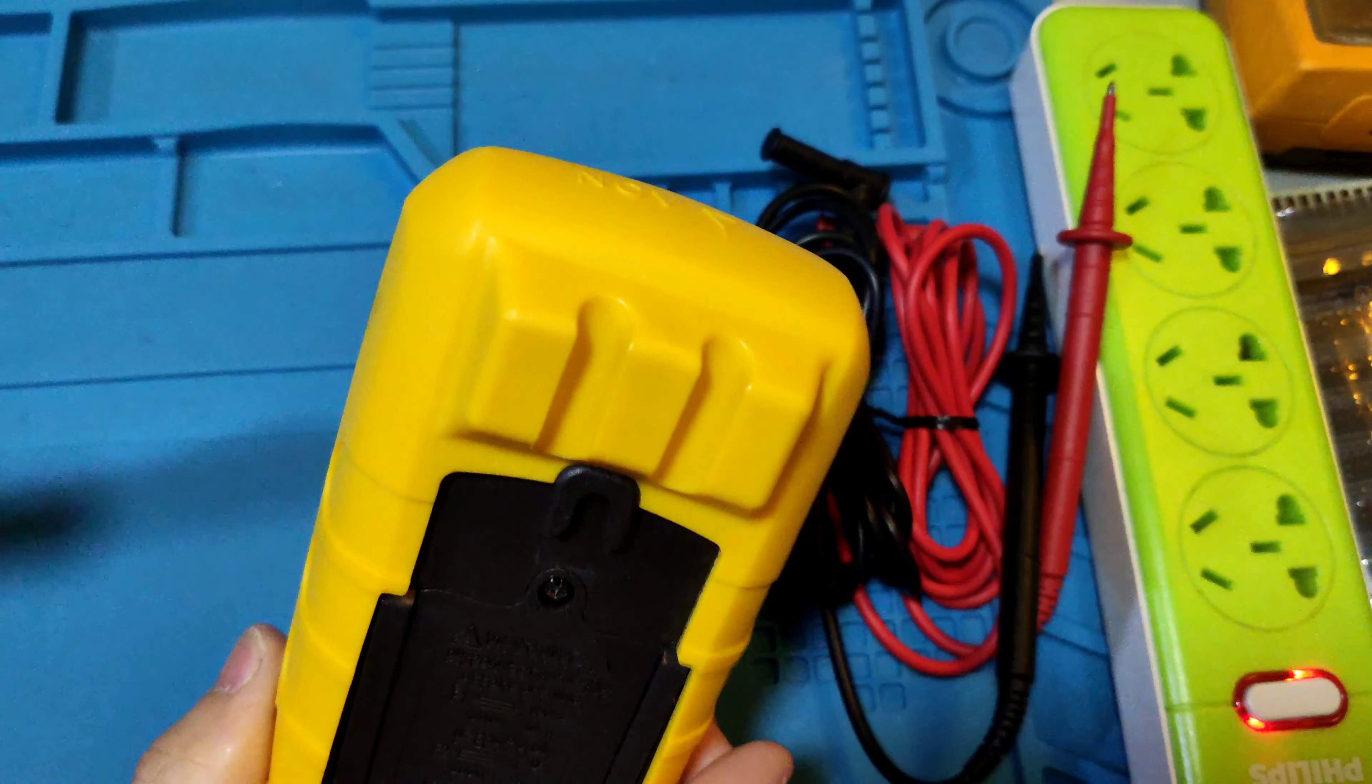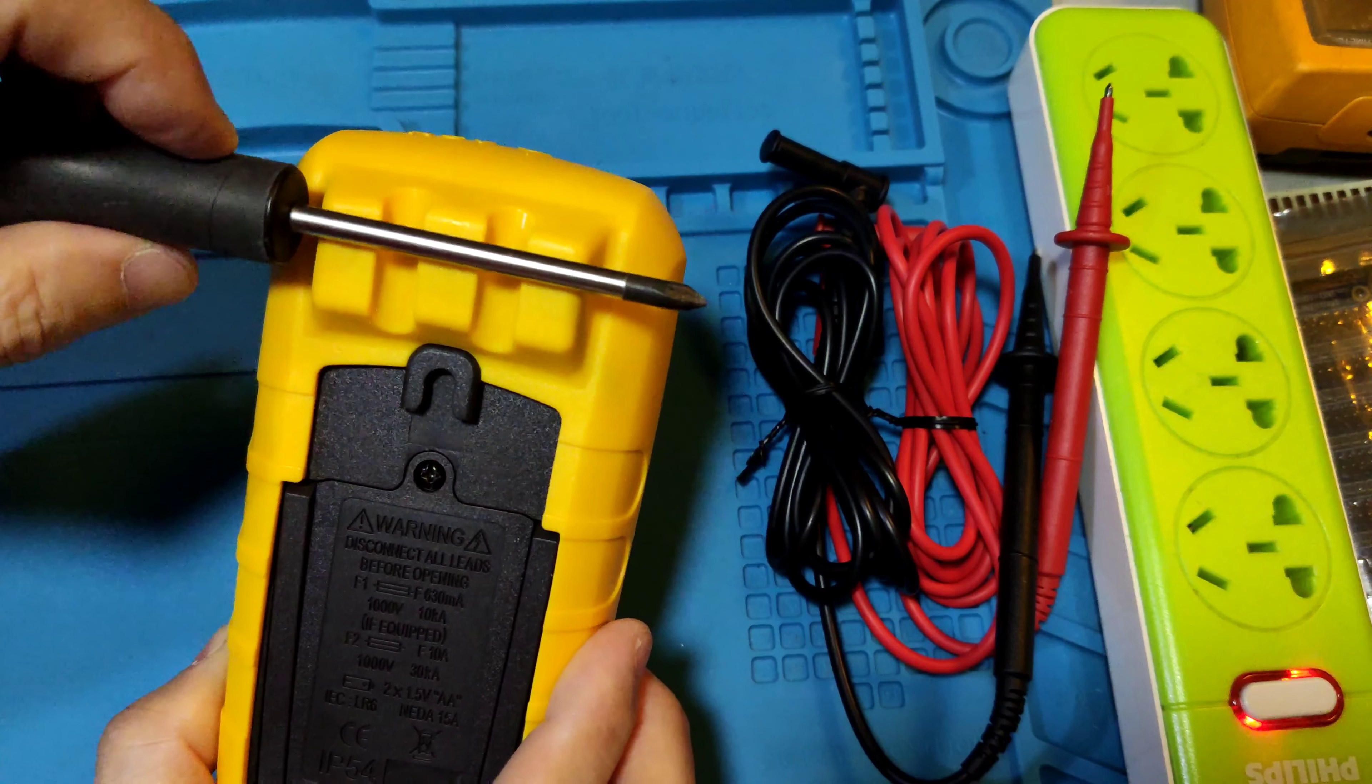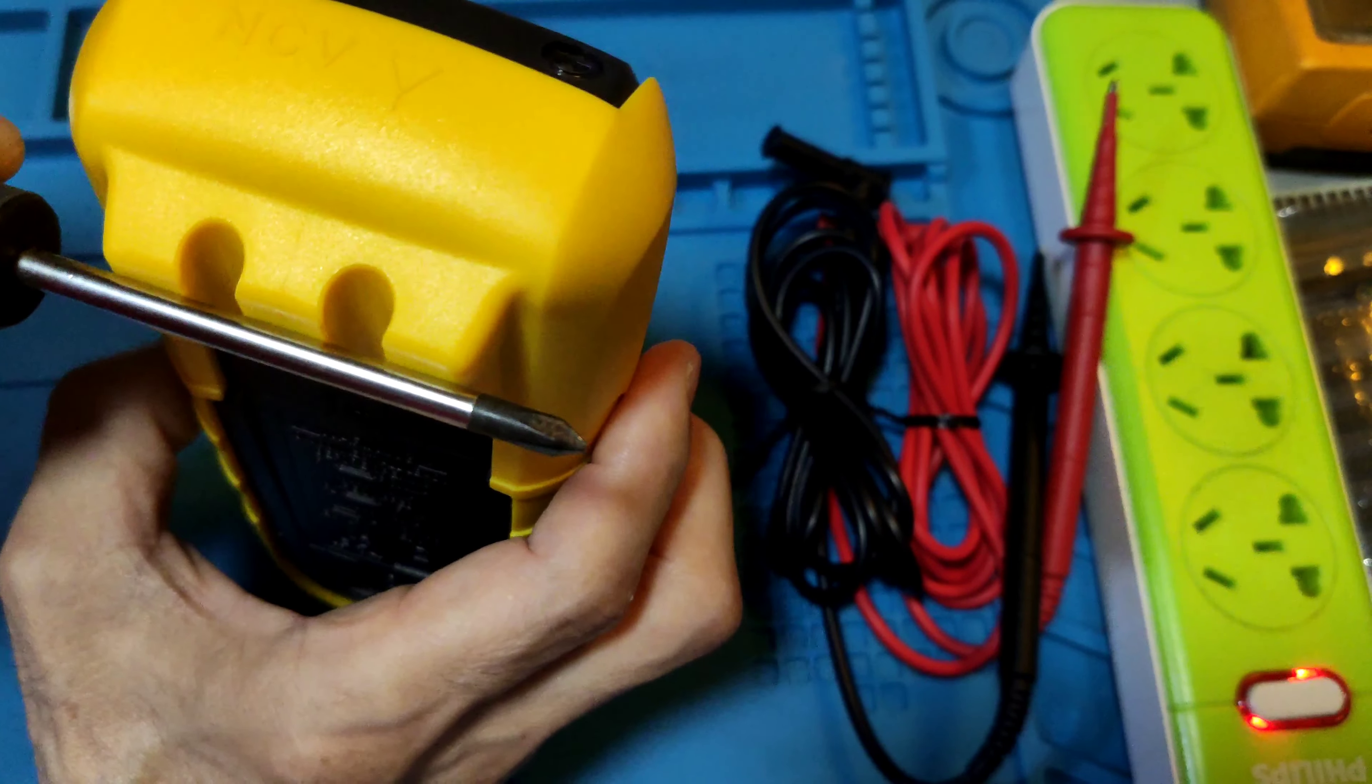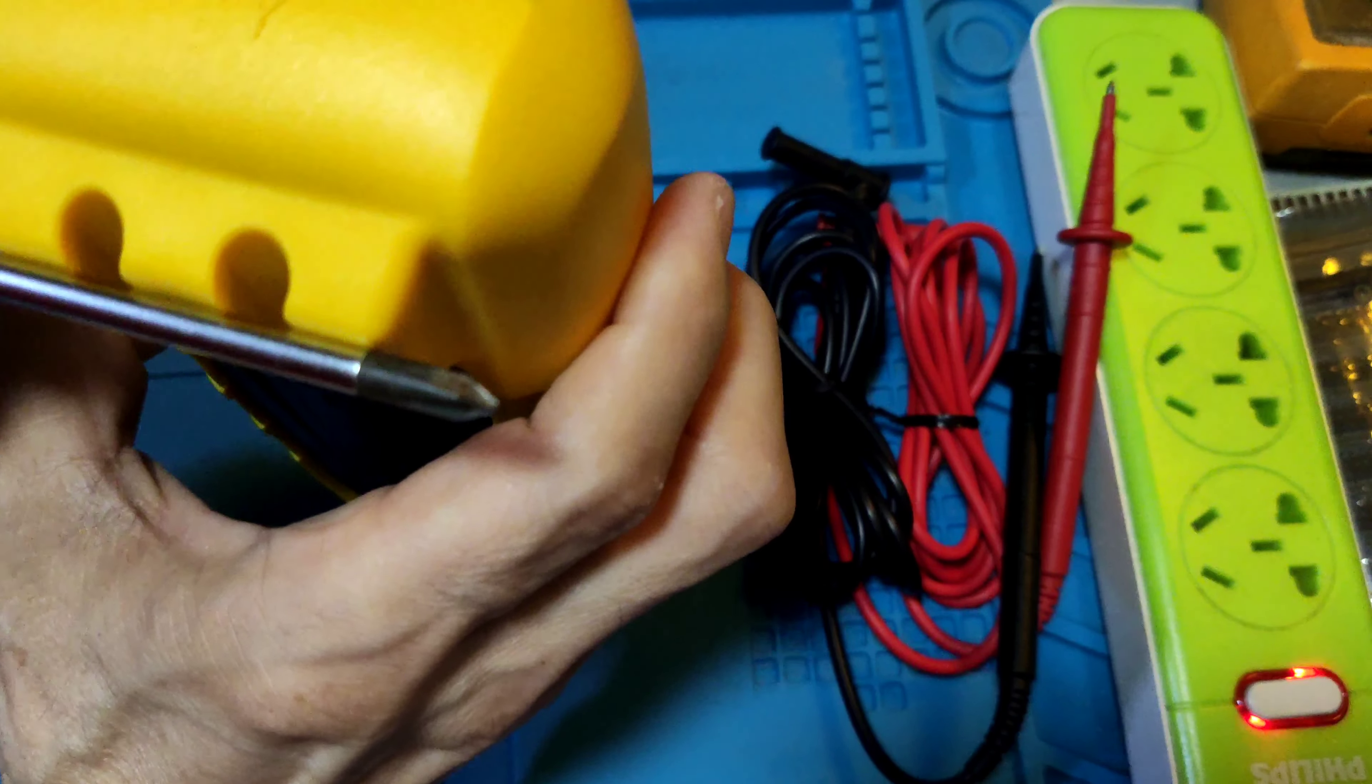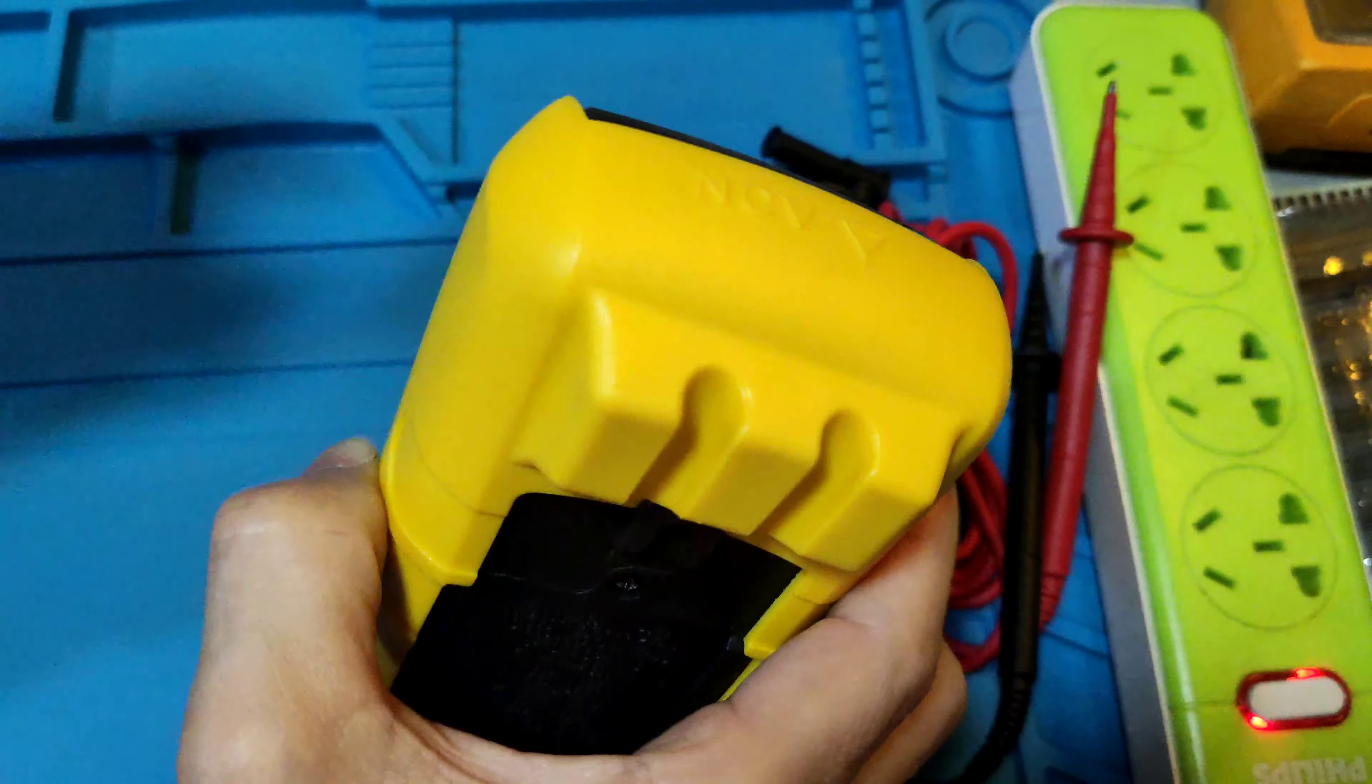This meter on the back side has three magnets. It's easy to attach on a metallic box, but the magnet is not very strong.